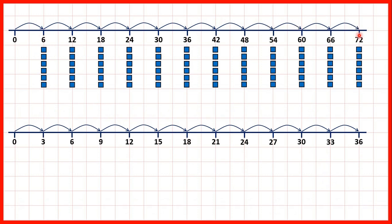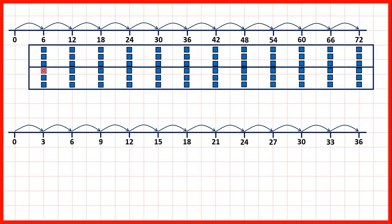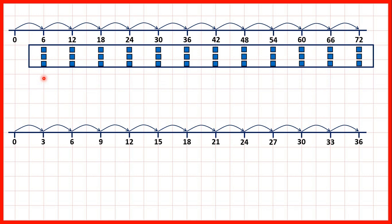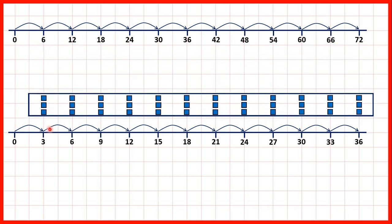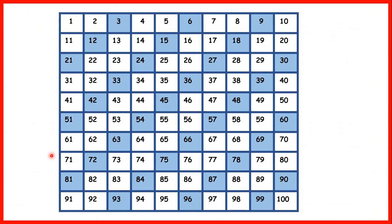If we have our 6 times table we can split the counters in half — get rid of half of our counters — and then we have the 3 times table. Or on a 100 square we can colour in all multiples of 3. If we kept counting up in 3s after 36, we would have all the numbers coloured in blue. Now if we show the 6 times table, we can see that all the multiples of 6 — all the numbers coloured in now — were also coloured in when we were colouring in our multiples of 3.